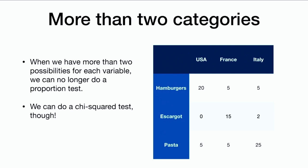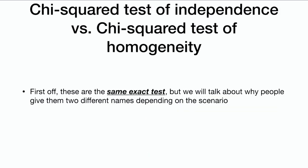Here we see data on two categorical variables: what country you live in and what your favorite food is. A chi-squared test of independence and a chi-squared test of homogeneity are often taught as two different things, but they are really the exact same test. We're going to do the exact same calculations, and we'll talk about why people discuss them differently — but nothing will actually be different in what you do for these tests.